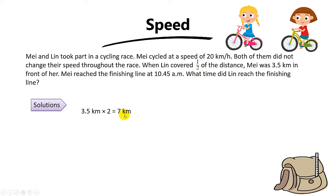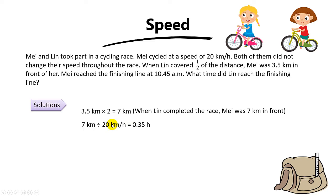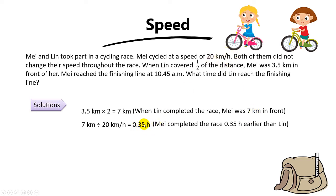Since we know that May's speed is 20 km per hour, we take 7 divided by 20 and get 0.35 hours. This represents the time that May completed the race ahead of Ling — because when Ling completed the race May was 7 km ahead, so distance divided by speed gives us the time difference. Now we convert hours to minutes by multiplying by 60: 0.35 times 60 gives us 21 minutes.